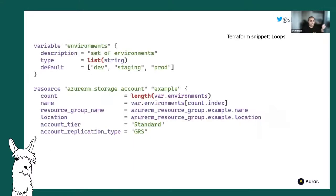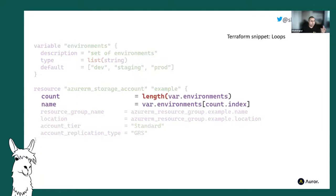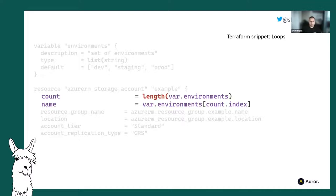For completeness, here's the Terraform example — we've got an array, the count is the length of the array, and the name indexes into the array based on the current count. Again I find this more readable, though that could be personal preference. This kind of thing is what originally led me to look at Terraform — I thought it would be more maintainable for a small full-stack dev team who didn't do cloud infrastructure themselves. And then I discovered Pulumi.